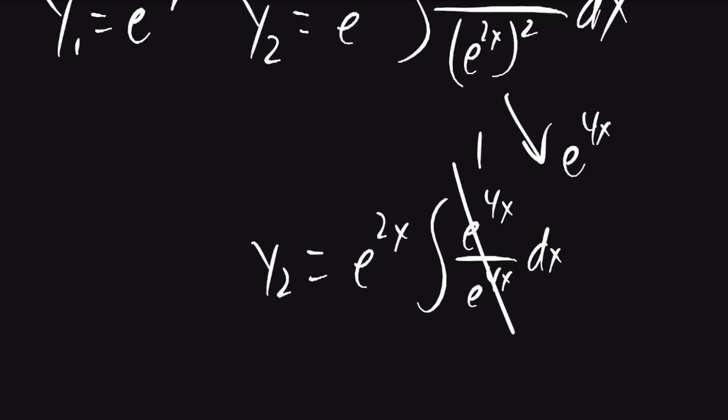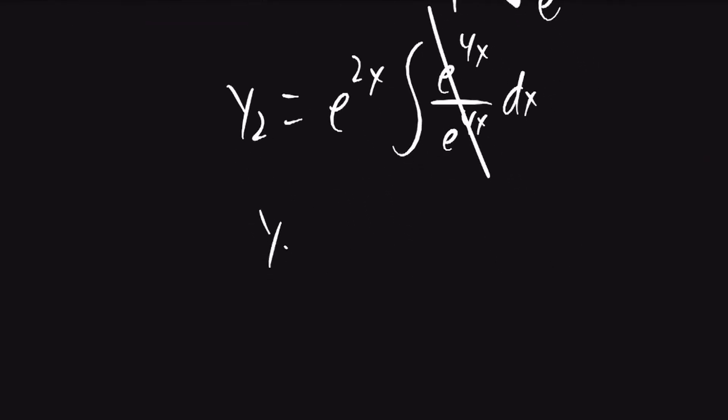The e to the 4x will cancel, and we'll be left with the integral of 1 dx, which will just be equal to x. So y2 will be equal to e to the 2x times x.